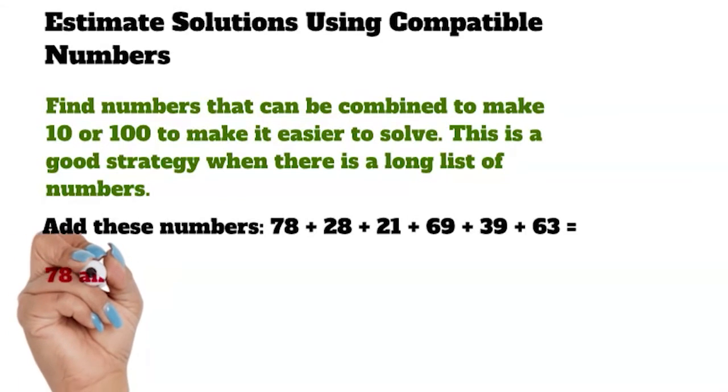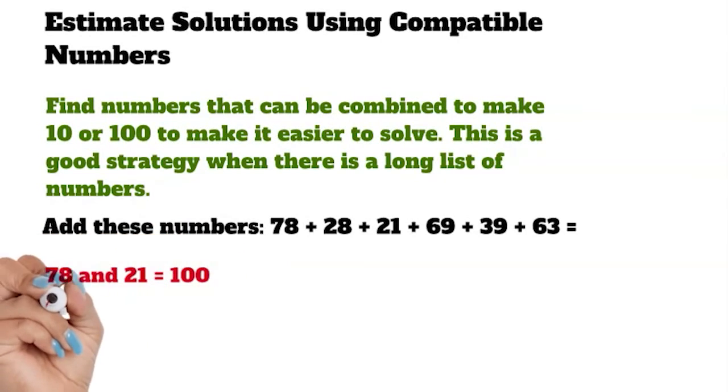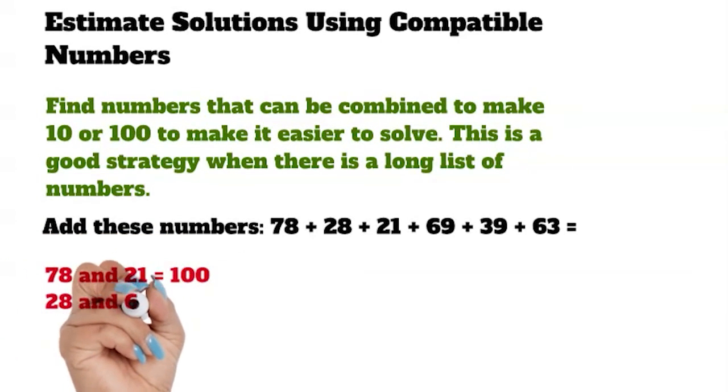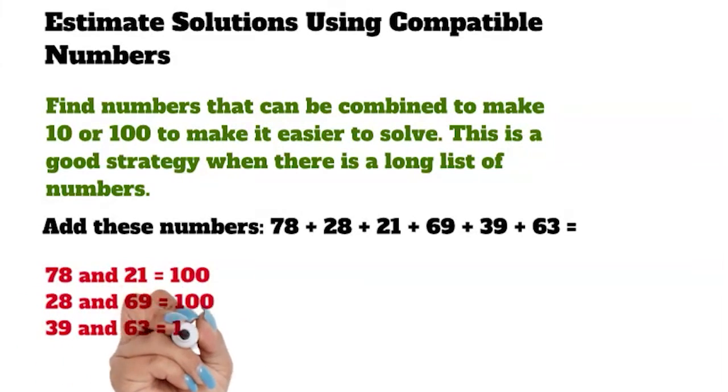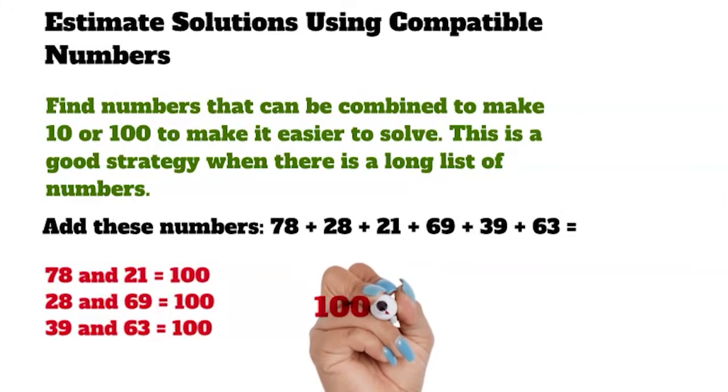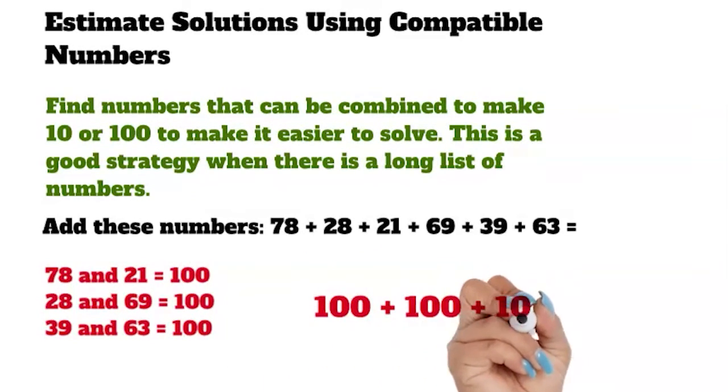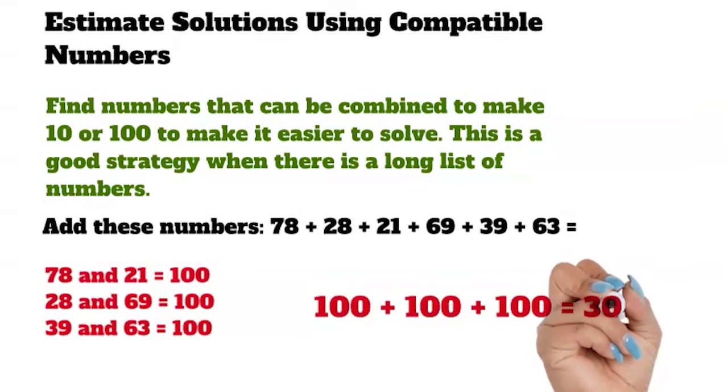78 and 21 is about 100. 28 and 69 is about 100. 39 and 63 is about 100. Now add 100 plus 100 plus 100. It equals 300. The list of numbers must add to around 300.